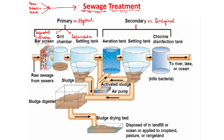Next is sedimentation, which occurs in two chambers: the grit chamber and the settling tanks. After sequential filtration removes all floating material, water flows slowly into the grit chamber where pebbles, small stones, sand, and soil sediment to the bottom. Then water moves into the settling tank, where all suspended solids like organic waste sediment and form the primary sludge.